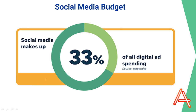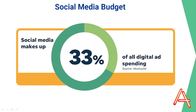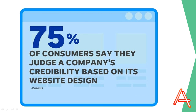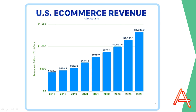Speaking of digital advertising, social media is one of the most popular platforms for businesses to advertise on. Social media ad spending was expected to reach $105 billion in 2021, which is a 20% increase from the previous year. This shows how important social media is for businesses to reach their target audience and how it is becoming a crucial part of the digital marketing industry.